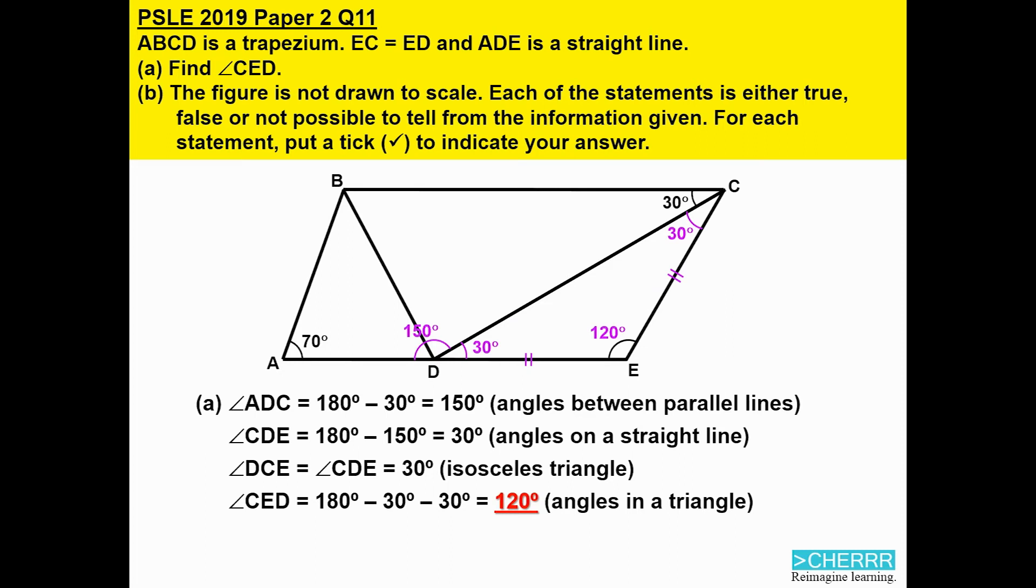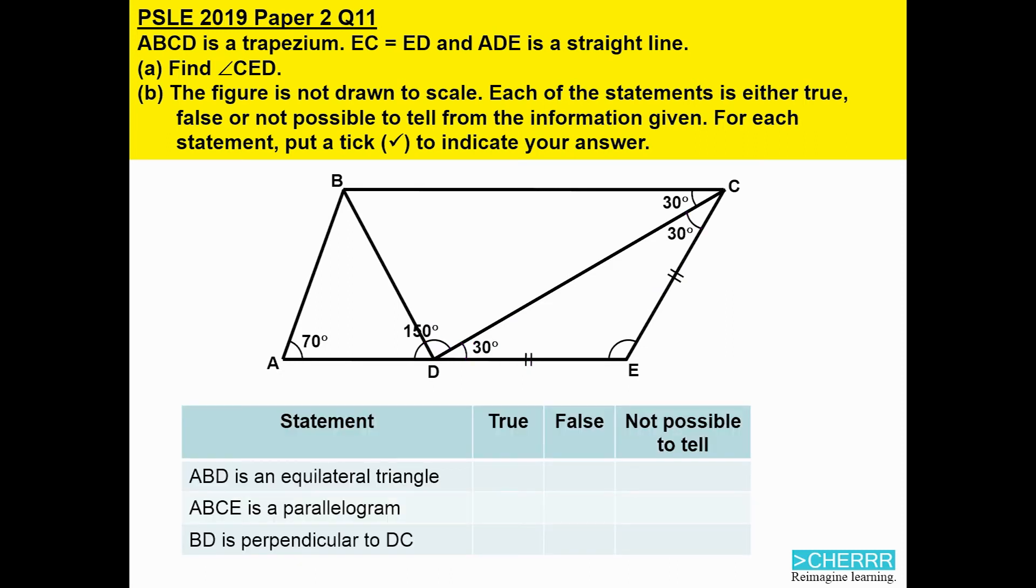Now we look at the three statements. The first statement: ABD is an equilateral triangle. In order for a triangle to be equilateral, all three angles must be 60 degrees. Here we have one angle that is 70 degrees, and the other two angles are unknown, so we can conclude that it must be false.